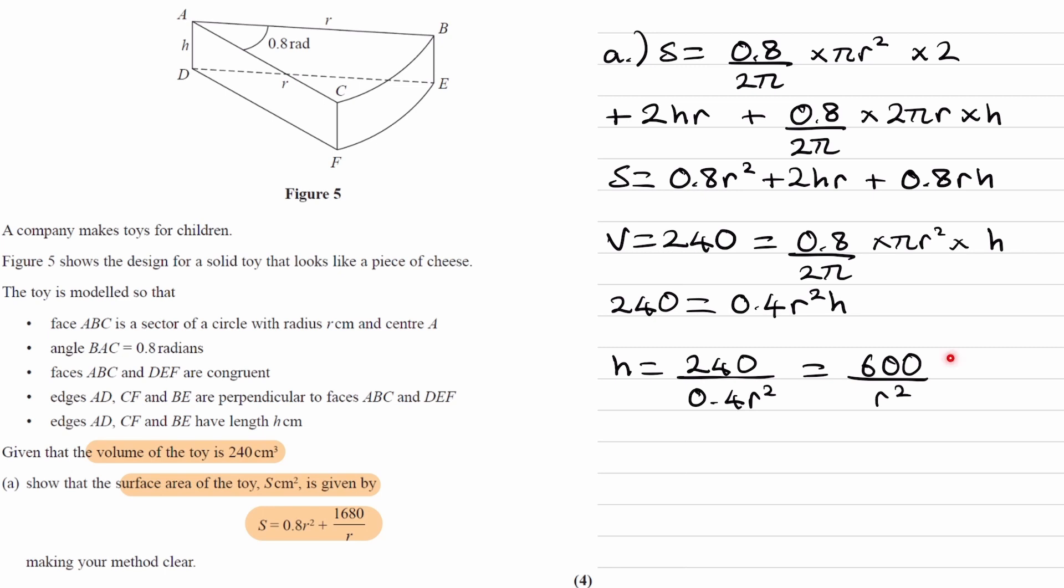We can now sub this equation into this one, so replace both of the h's with this. And we would end up with 0.8r² plus 2r, so replace this h with this, and we'd end up with 600 over r². Final term, 0.8r times, again, 600 over r².